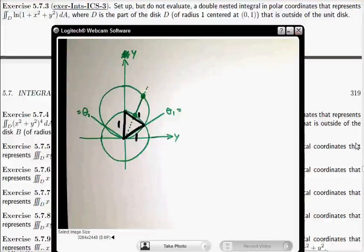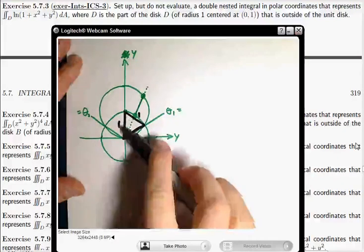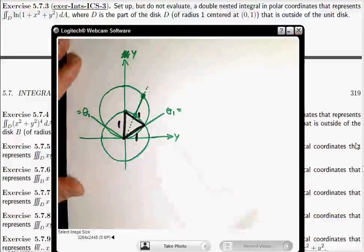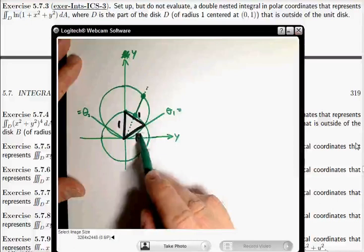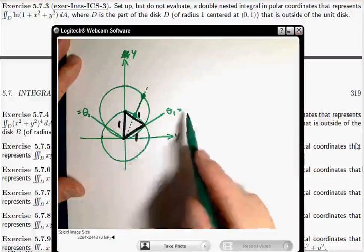So this angle here is π/3. And that makes this angle here, the theta 1 that we're interested in, π/6.